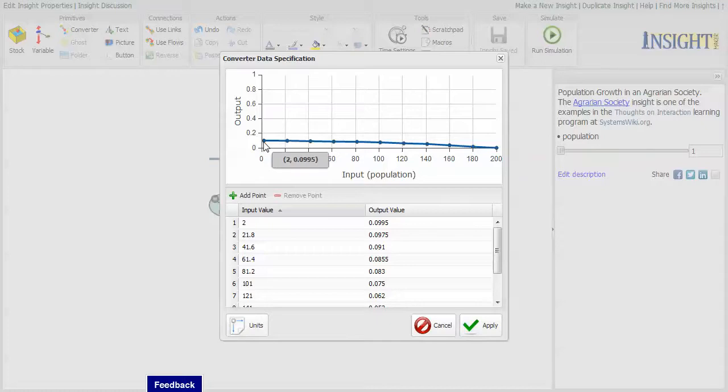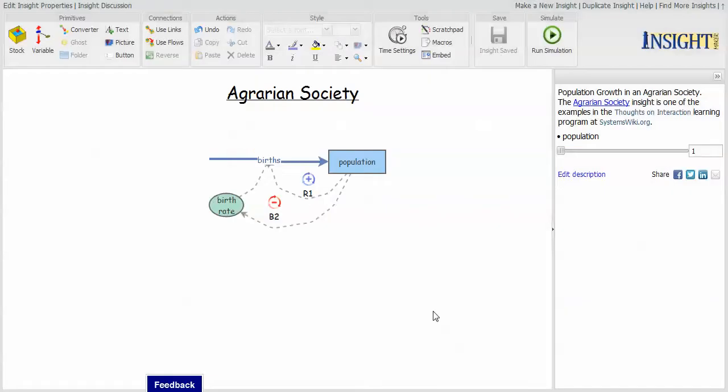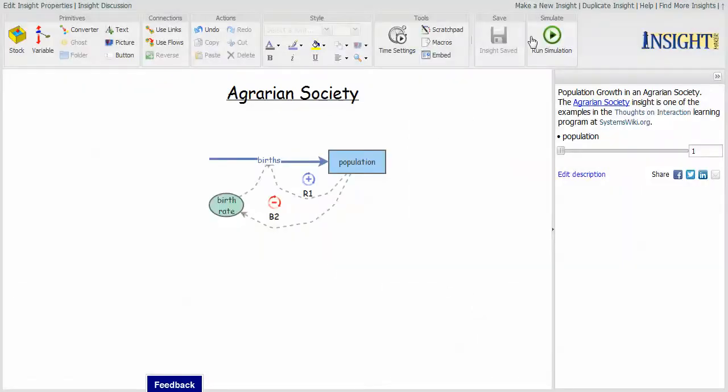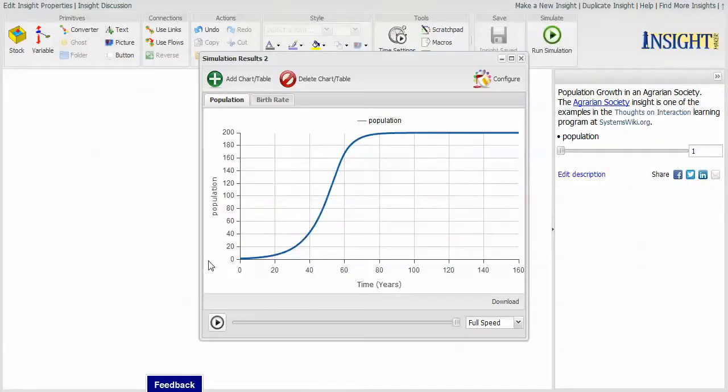If you look at the birth rate, it begins at a value of about 0.095, and as the population increases, the birth rate decreases. So what this ends up doing, if we look at the way that this is defined, is the birth rate times the population.